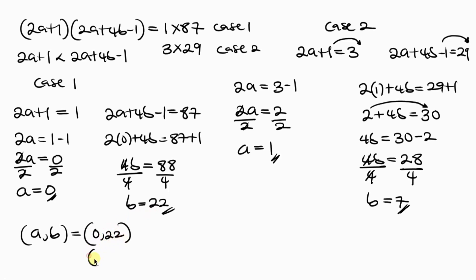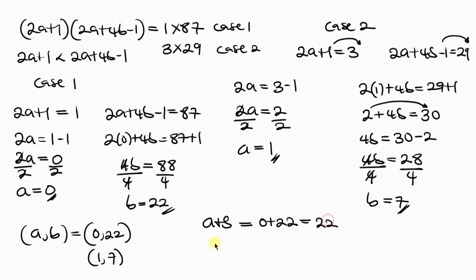The two values of a and b we've found are: a equals 0 and b equals 22, and also a equals 1 and b equals 7. Since we're asked to find a plus b: for the first case, 0 plus 22 equals 22; for the second case, 1 plus 7 equals 8. So these are the two values of a plus b.